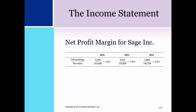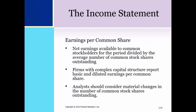The net profit margin decreased in 2015 but increased in 2016 above the amount for 2014. Earnings per share is the net earnings available to common stockholders for the period divided by the average number of common stock shares outstanding. Companies with complex capital structures — which means they have convertible securities, stock options, or warrants — must compute both basic and diluted earnings per share. The diluted earnings per share is slightly lower each year compared to the basic earnings per share because of the dilutive effect of stock options that employees could exercise in the future. Analysts must consider any material changes in the number of common shares outstanding, as this affects the earnings per share calculations.